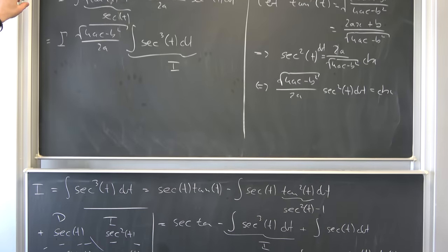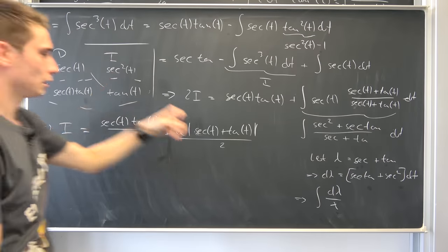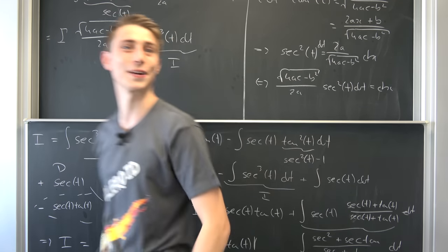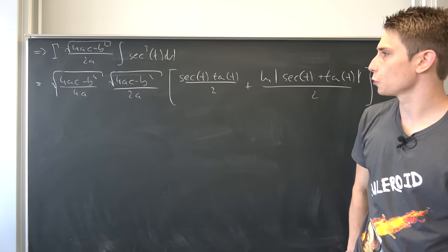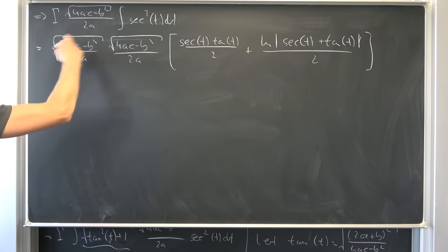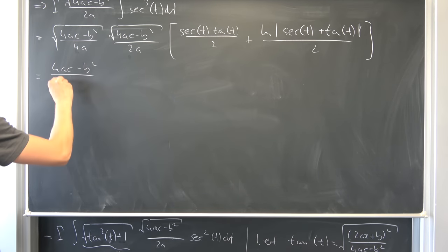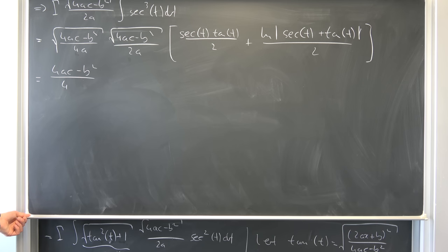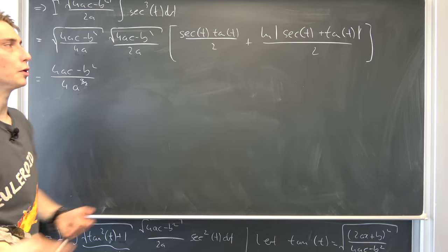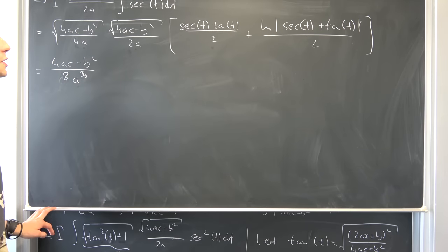That is basically it. All we really have to do is resubstitute everything. We are close to being done — all that's left is to resubstitute and simplify a bit. This first one is just 4ac minus b squared and down here this is just 2 times 2 giving us 4, and we also have this a to the 3/2 power. We bring the one half to the outside, turning this 4 into an 8.